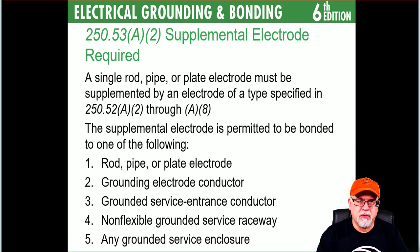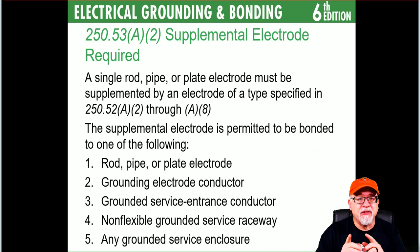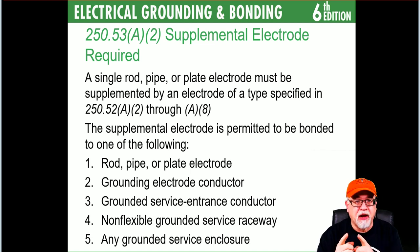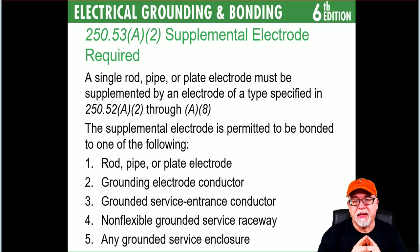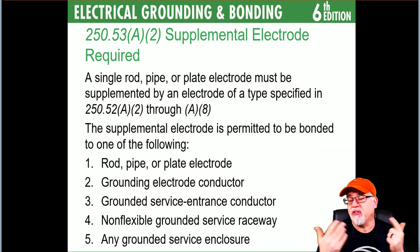A single rod, pipe, or plate electrode must be supplemented by an electrode of the type specified in 250.52(A)(2) through (A)(8) — notice it doesn't say (A)(1), the water pipe. If you can show the resistance of a single rod, pipe, or plate is 25 ohms or less, a supplemental grounding electrode is not required. In the last couple of code cycles we shifted — now you supplement always with two to start, unless you can prove it's 25 ohms or less, in which case you can go back down to one.